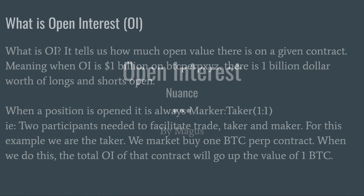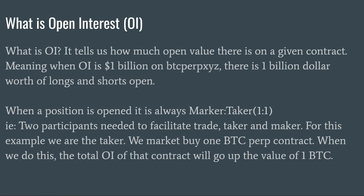What is open interest, commonly abbreviated as OI? Open interest tells us how much given value is currently open on a contract. When we read that open interest is currently 1 billion dollars on the major Bitcoin perp, that means there is 1 billion dollars worth of longs and shorts currently open.